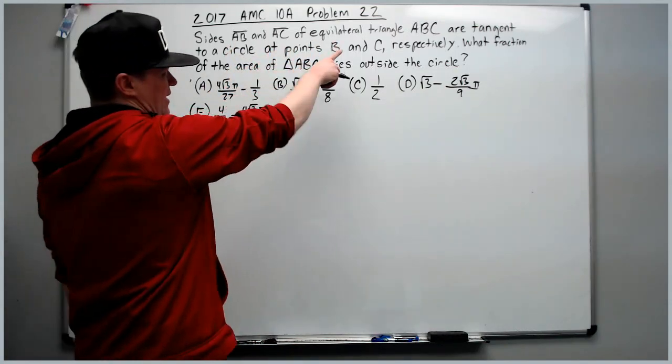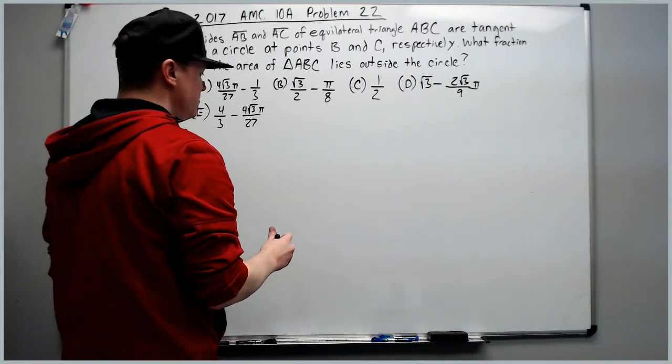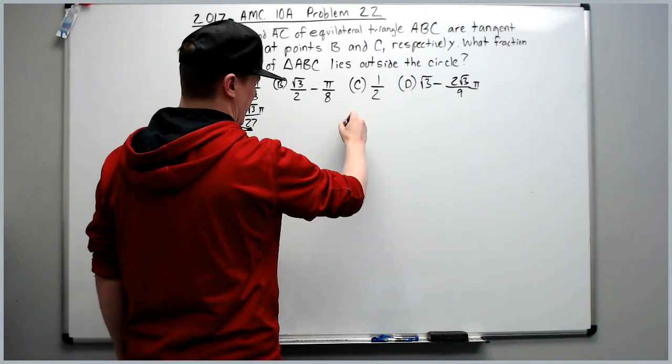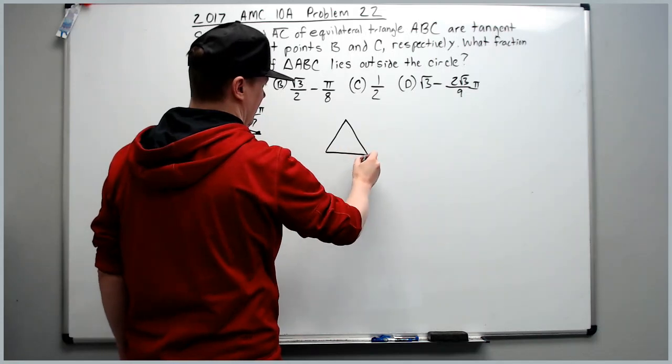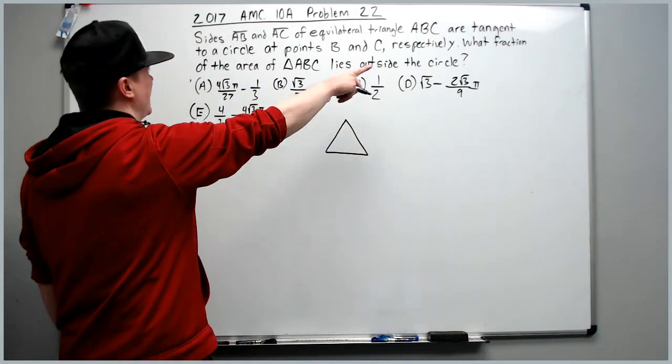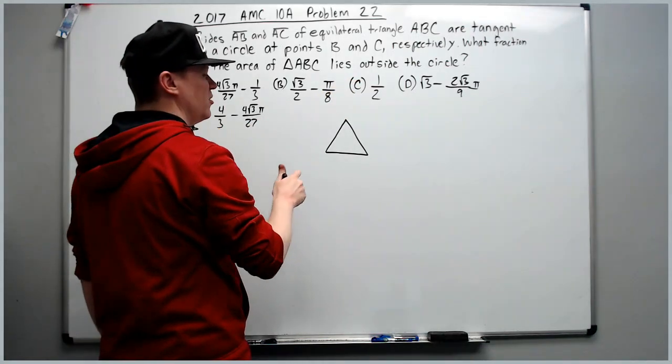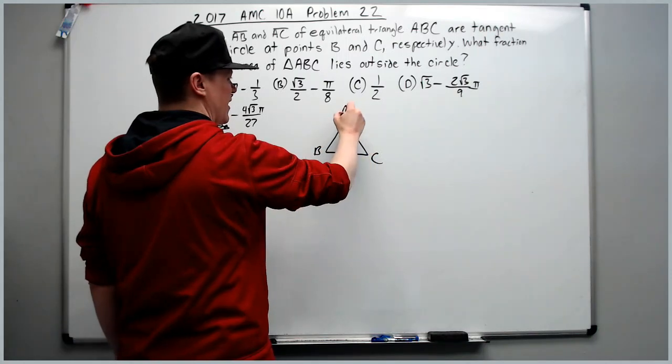Sides AB and AC of equilateral triangle ABC are tangent to a circle at points B and C. We'll start by drawing an equilateral triangle, or an approximate drawing of one. Let's put B and C here with A at the top.